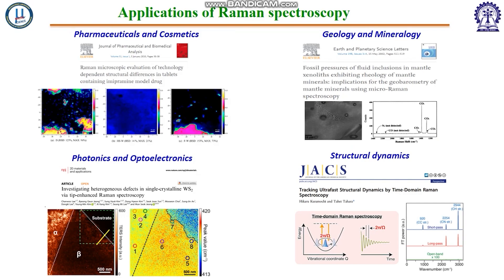There are huge applications of Raman spectroscopy in different fields. In the pharmaceutical and cosmetic industries, it is widely used to determine compound distribution in tablets, doses, content uniformity, and contaminant identification. In the geology and mineralogy departments, gemstone and mineral identification, phase distribution in rock sections, and mineral behavior under extreme conditions are analyzed using Raman spectroscopy.